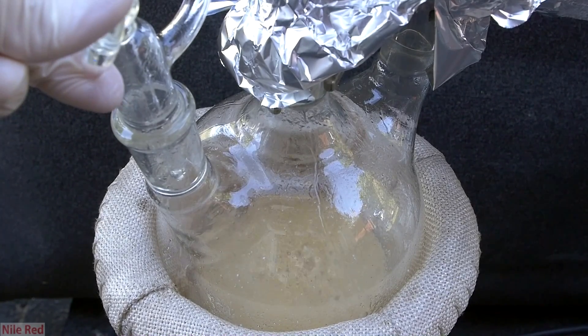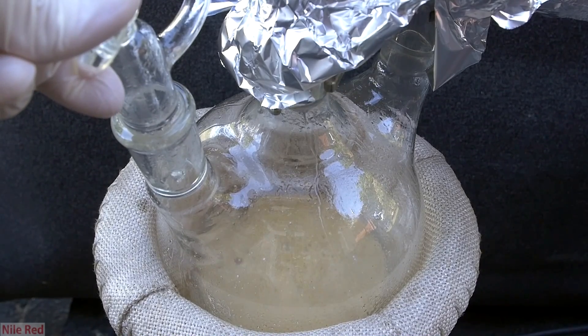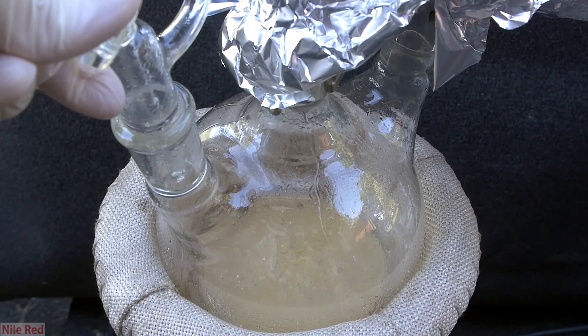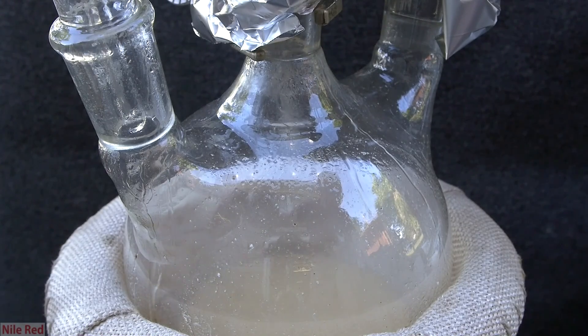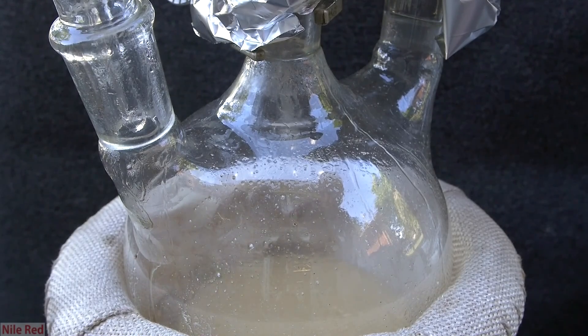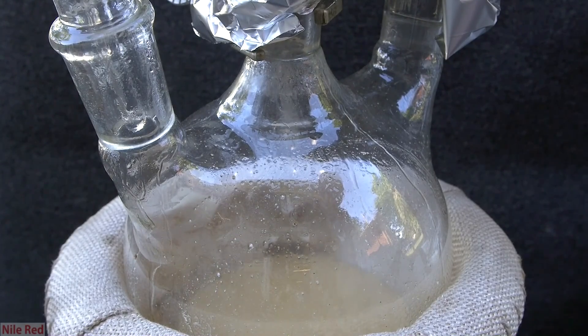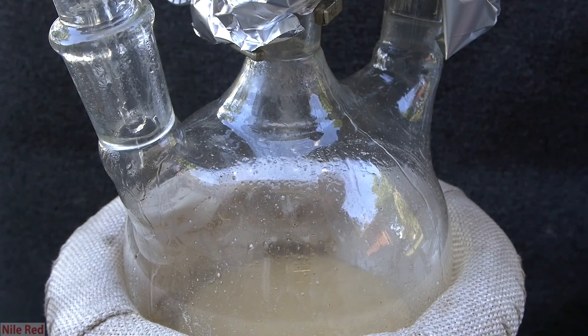In theory, we should add things at the same rate that we're collecting our acrolein in the final flask, but I found this really hard to do. Glycerol is really viscous, and with the addition funnel, I found that the drip rate was either way too fast, or way too slow. I think I gave up trying to add it at a constant drip rate, and I just added it in portions by opening the addition funnel to max for a little bit, and then closing it.